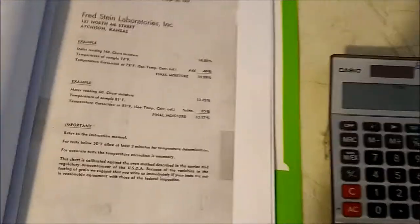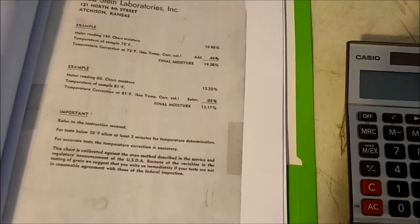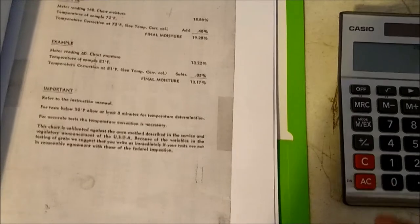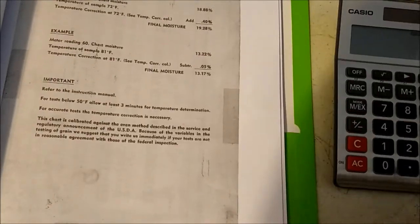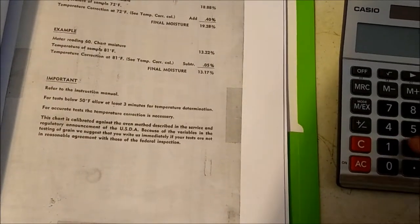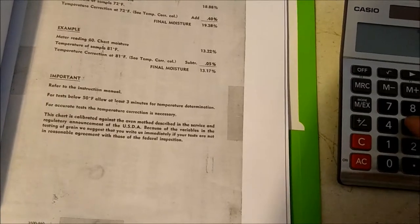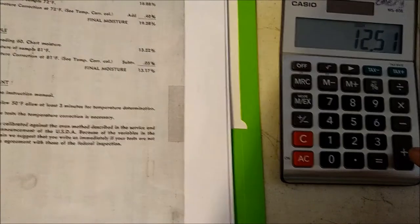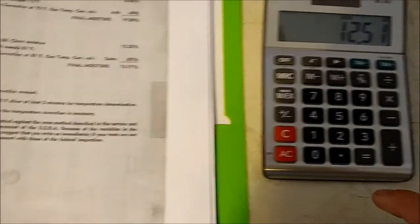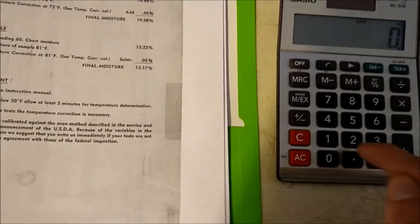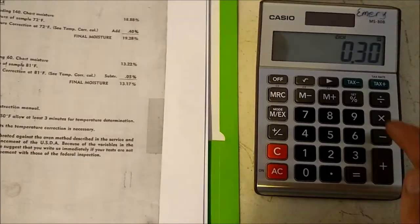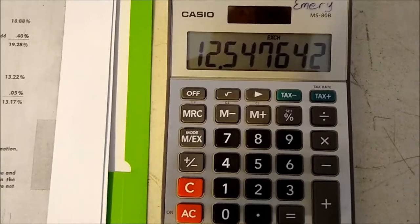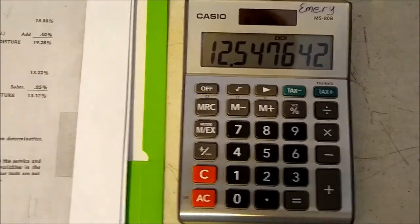Looking here at the example in the manual to help us calculate the moisture: our reading was 50, which means our moisture was 12.51 percent. Adding in the temperature correction, which was 0.30 percent, gives us a moisture reading of 12.54 percent on the soybean.